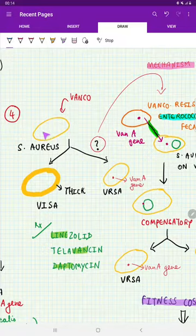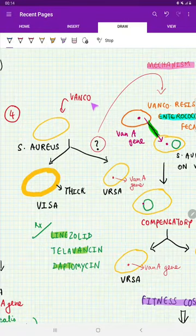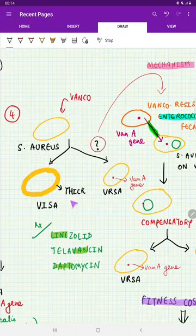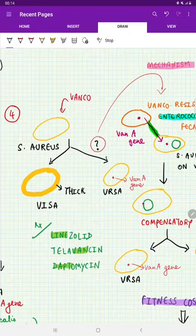Next, coming to our important discussion. Supposing there is an infection, we are giving Vancomycin. Now what happens, this bacteria can show one change: there is thickening in the cell wall. By this, there is Vancomycin intermediate Staphylococcus aureus (VISA).